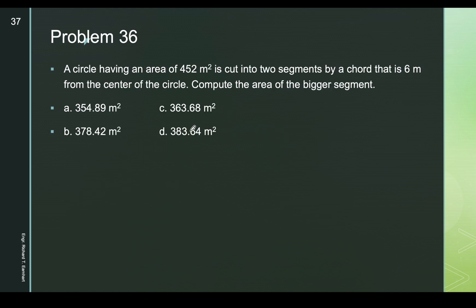Problem 36: a circle with area 452 square meters is cut into two segments by a chord that is 6 meters from the center. Compute the area of the bigger segment. Since the area is 452 = π r², we can solve for r: r = √(452/π) = 12 meters.